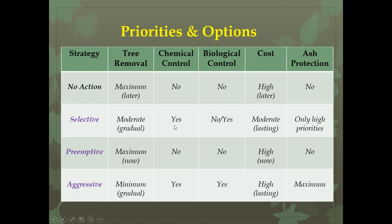What ash trees are high priority? If there's a black ash in good condition outside a nature center with a kiosk explaining its importance to Native American basket-weaving cultures, that's obviously one you save and treat. Then you have a nasty green ash in a narrow tree lawn under power lines that's been utility-pruned over the years — that one goes. Everything else is gray area depending on your budget and how many ash trees you have.